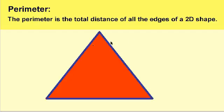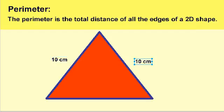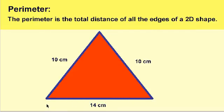So let's say the distance of this edge is 10 centimeters, the distance of this edge is 10 centimeters, and the distance of this edge is 14 centimeters. So one edge is 10, the other edge is 10, and the third edge is 14 centimeters.